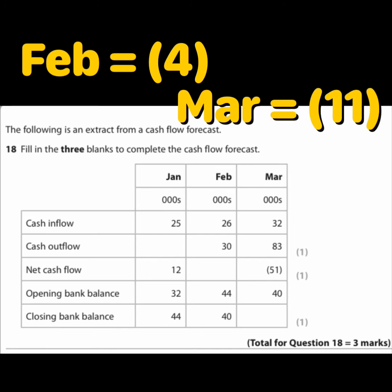The January calculation is left until last because it doesn't follow the usual net cash flow formula — they've actually given you the net cash flow of £12,000 and the inflows of £25,000, but not the outflows. Since the net cash flow is positive, inflows are greater than outflows. So subtract £12,000 from £25,000 to get outflows of £13,000. Double-check: 25 minus 13 equals 12. That's how you get all three marks.